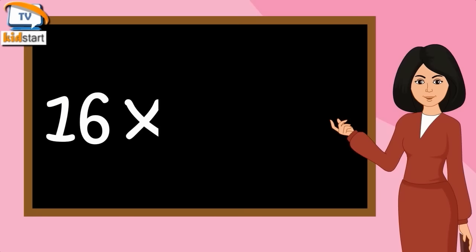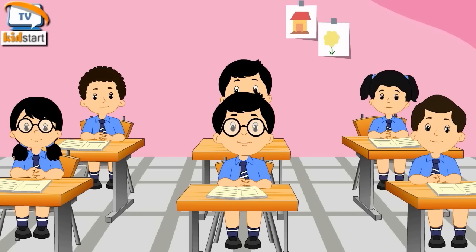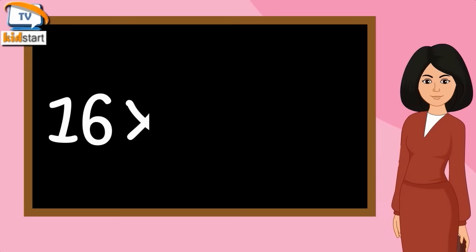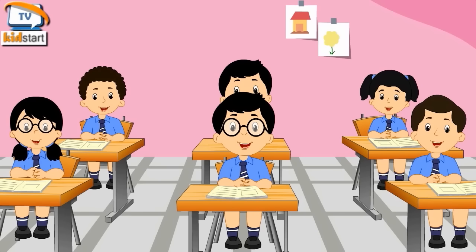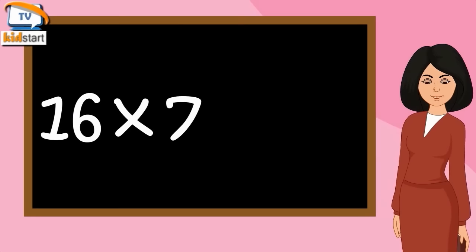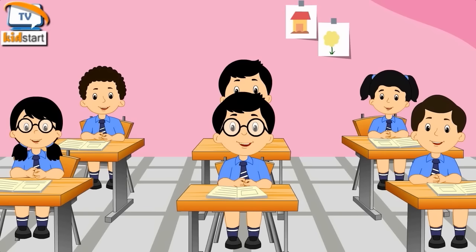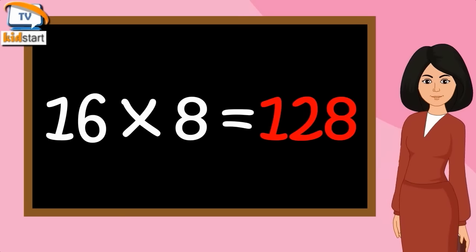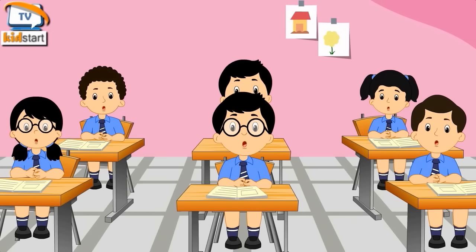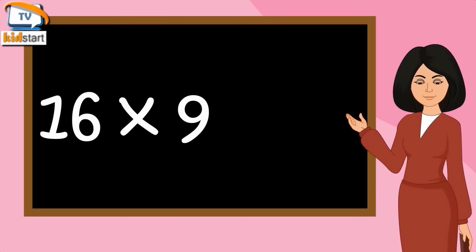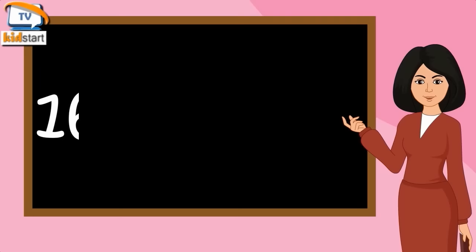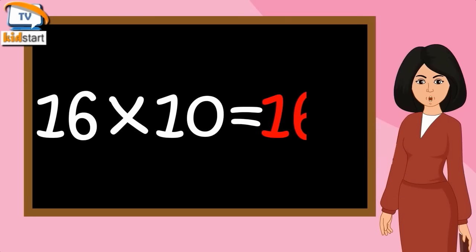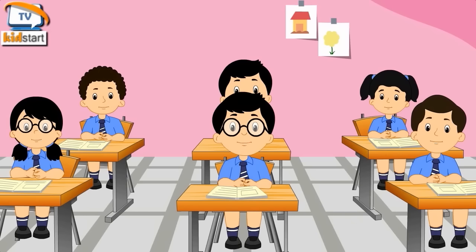Sixteen fives are eighty. Sixteen fives are ninety-six. 16 sevens are 112. 16 eights are 128. 16 nines are 144. 16 tens are 160.